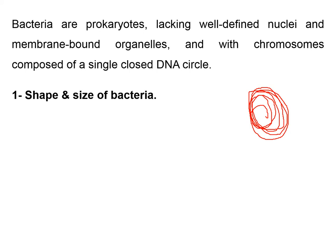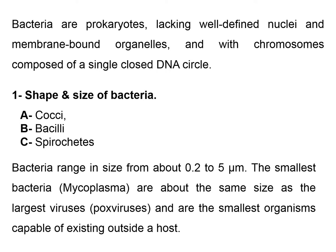Regarding the size and shape of bacteria, we have three main shapes. The first is cocci — like a ball, like a football. Bacilli are like a stick, very long. And spirochetes are like a drill. One of the most important examples of spirochetes is Helicobacter pylori, which can cause peptic ulcer disease in the stomach. The size of microorganisms ranges between 2.2 to 5 micrometers. The smallest bacteria are called mycoplasma, and they are about the same size as the largest viruses, called poxviruses.